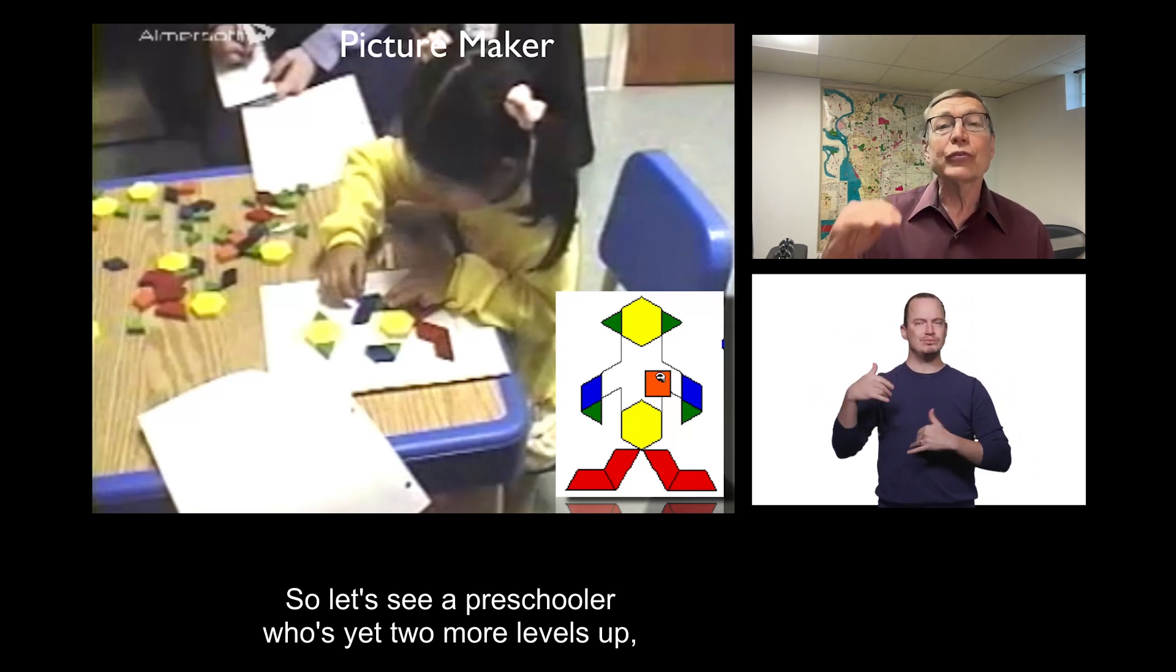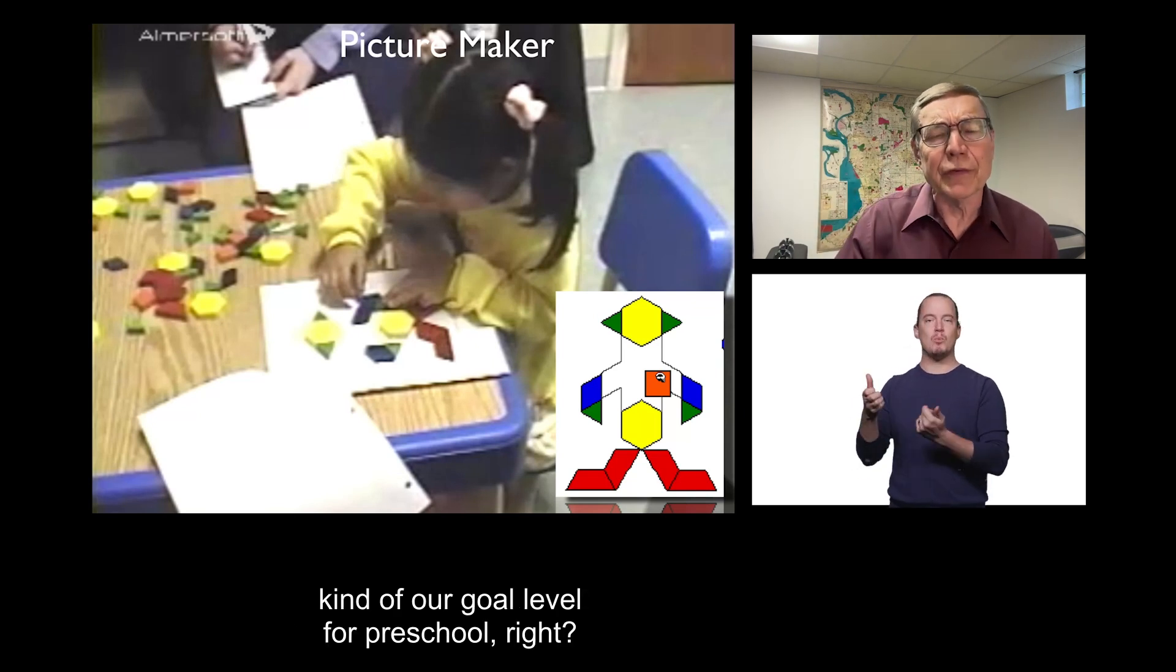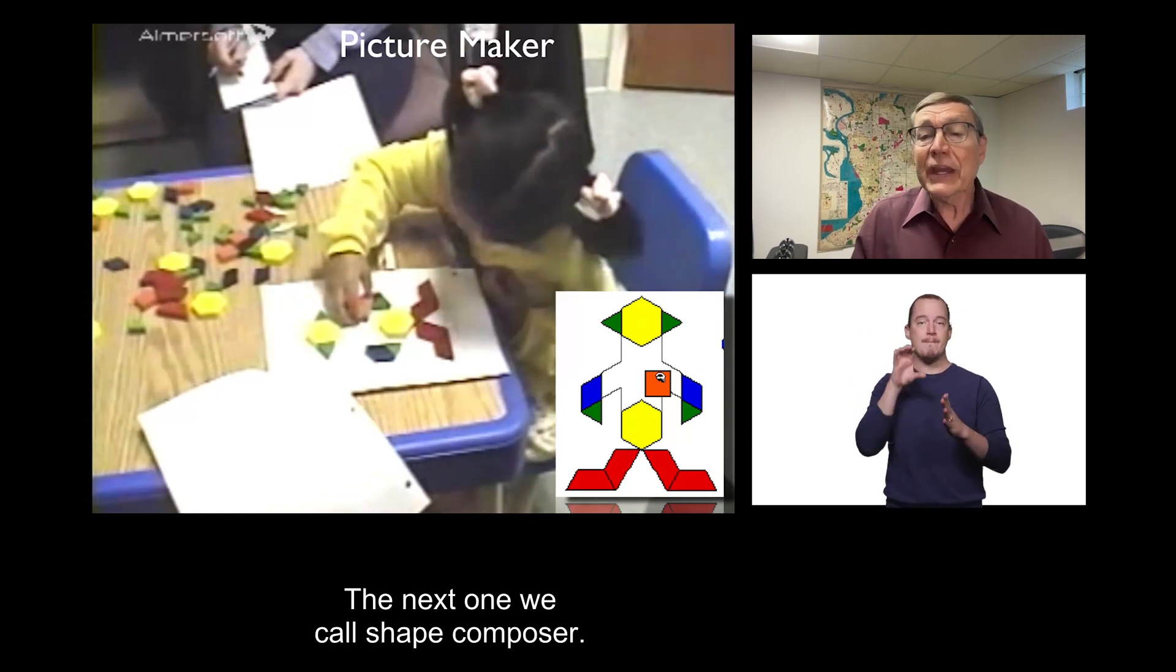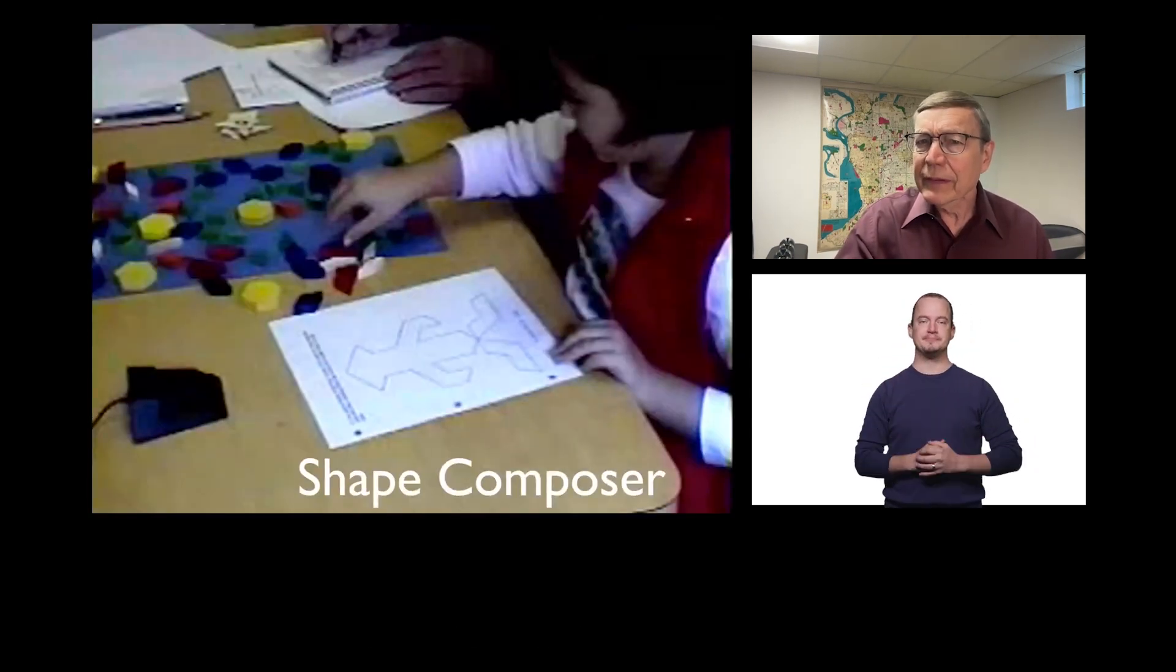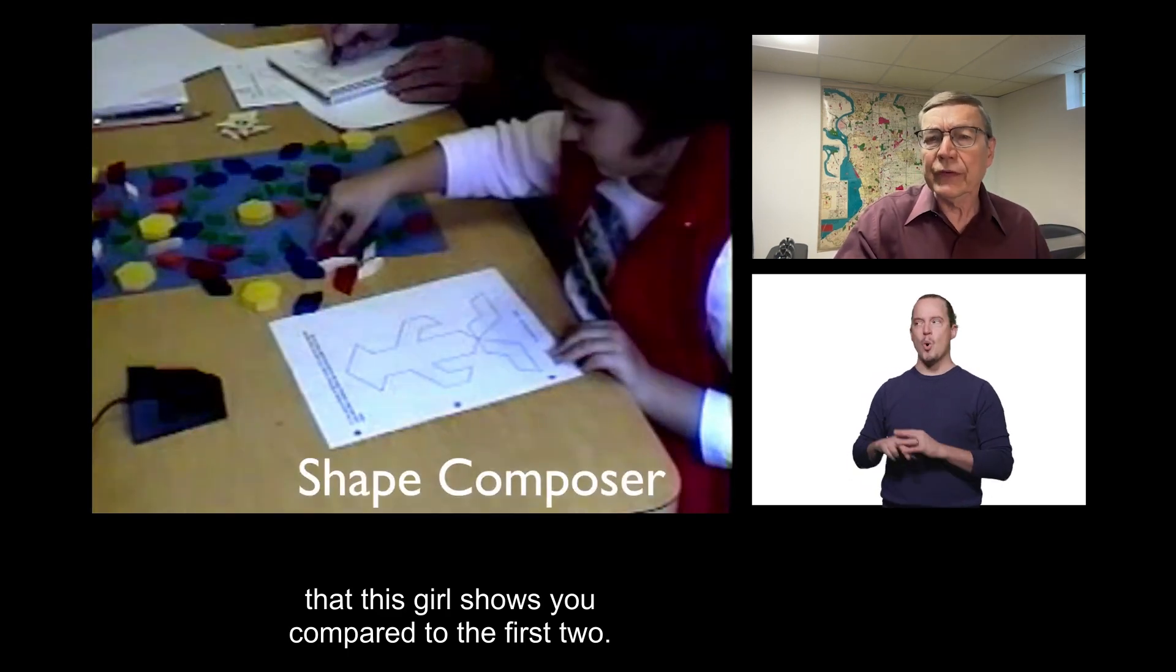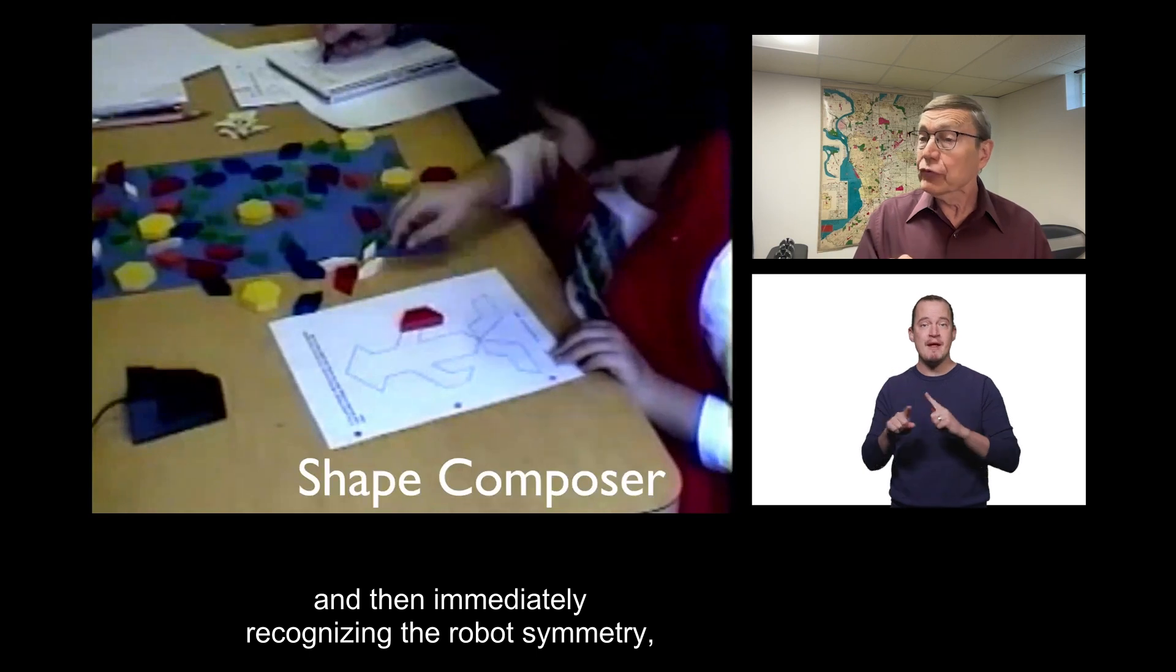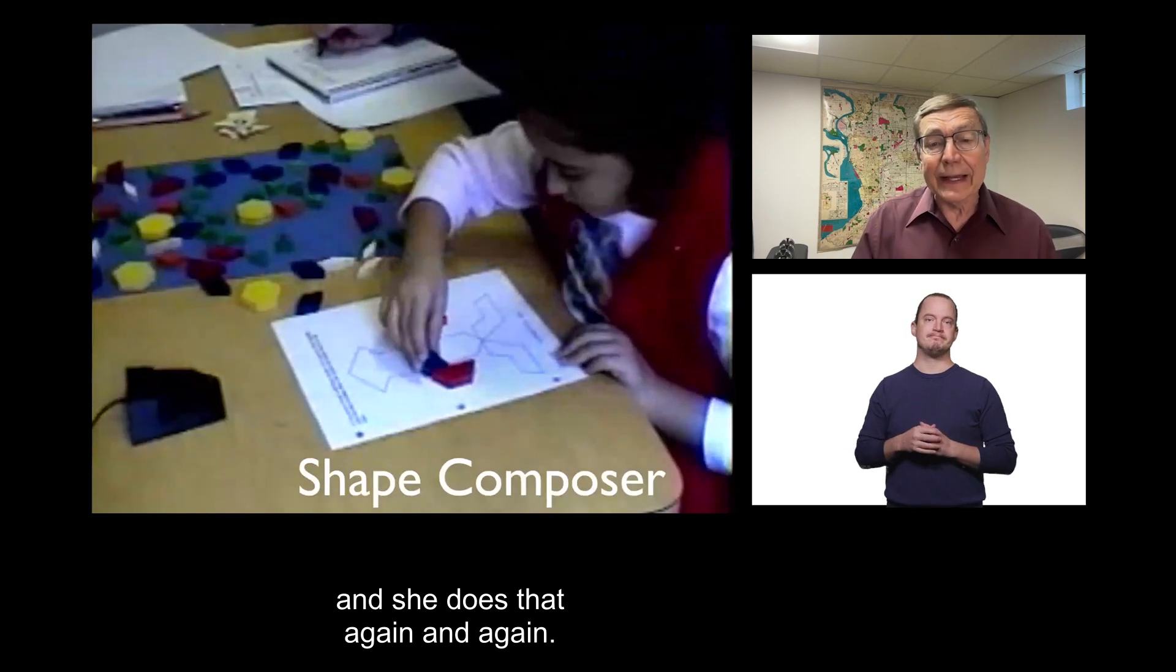So, let's see a preschooler who's yet two more levels up. Kind of our goal level for preschool. This one we call the picture maker. The next one we call shape composer. So, here we go. Watch the difference that this girl shows you compared to the first two. First of all, she's going to take a shape, and then immediately, recognizing the robot symmetry, she's going to put the symmetric shape on the other side. And she does that again and again.